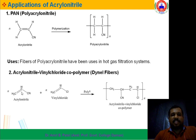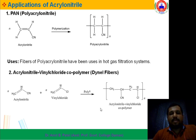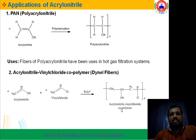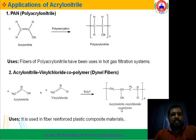The repeating unit is CH2-CHCN bonded to CH2-CHCl. This compound is known as Acrylonitrile-Vinylchloride Copolymer, also known as Dynal Fibers. Its use is in fiber-reinforced plastic composite materials.